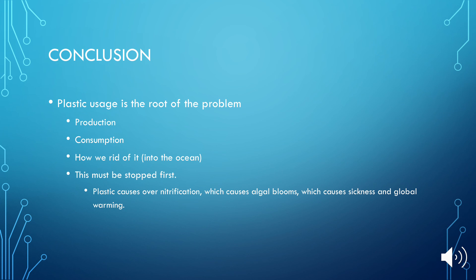To conclude: plastic usage is the root of the problem. Every article I read began with plastic. Our overproduction of plastic is polluting the air and our bodies, especially people in third world countries. We use plastic water bottles, throw them out — out of sight, out of mind — but they end up in the ocean, floating to third world countries, harming marine life. Just because it's out of sight doesn't mean it's not an issue. Over-nitrification and algal blooms are causing sickness and this is a public health issue. If we do not control this, more people will get sick. Thank you for listening.